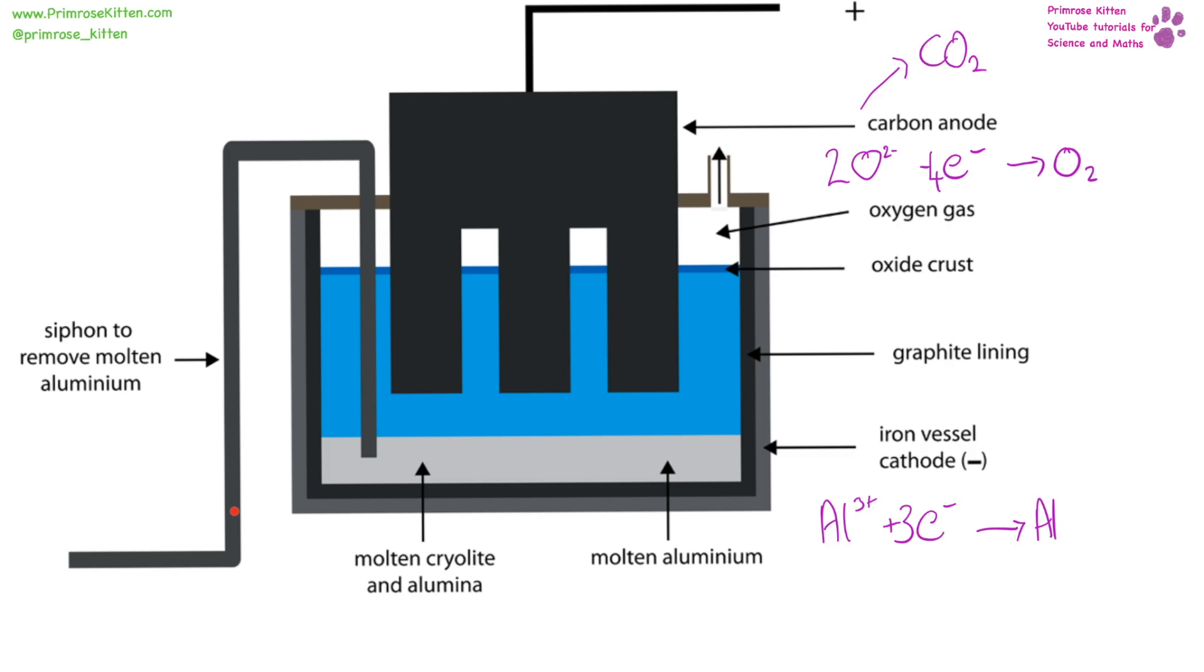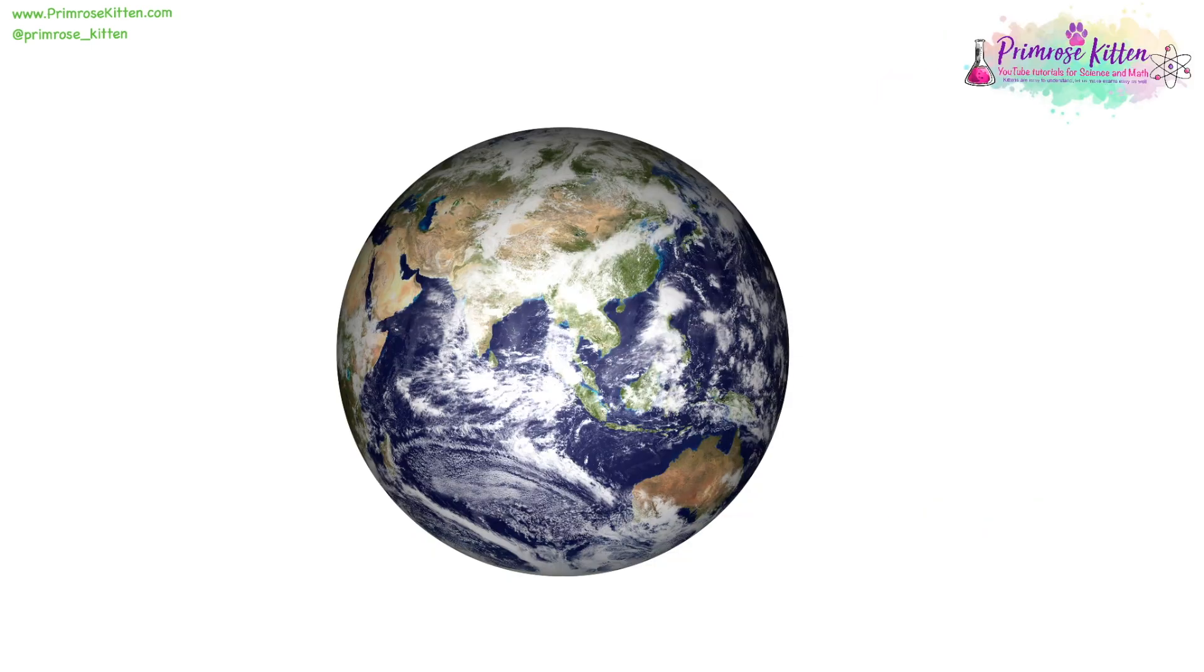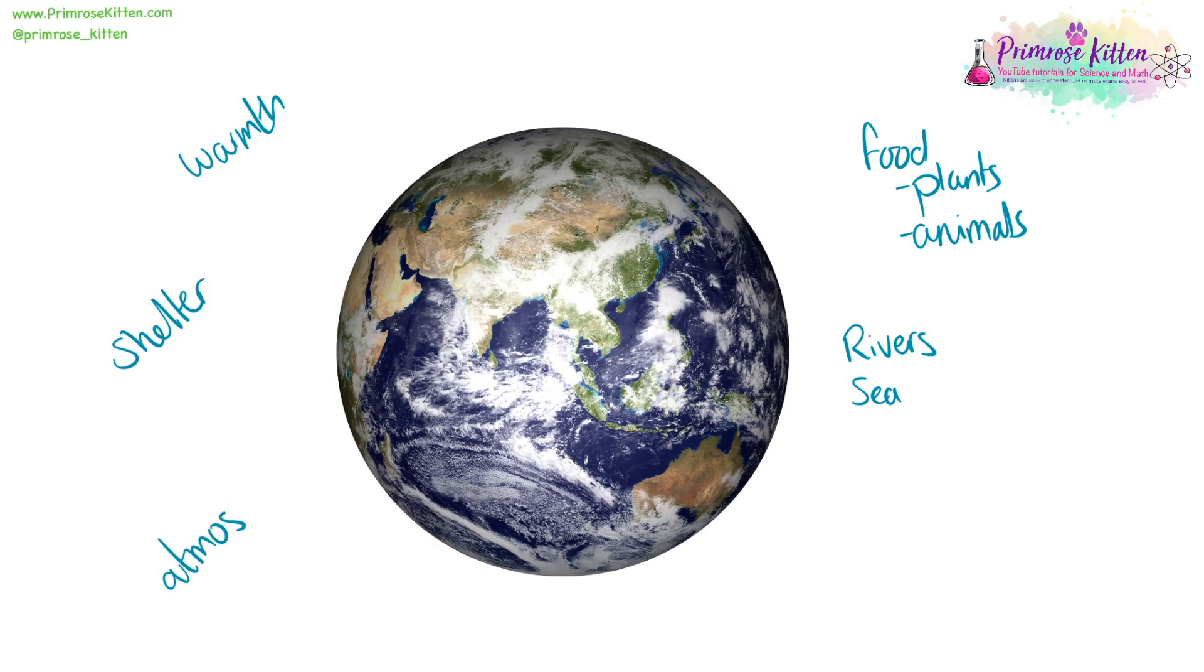The Earth provides us with many things, including warmth from the sun, shelter from the trees, food from plants and animals, transport along rivers, and we can get all of these from the rivers, the seas, the atmosphere and the land.